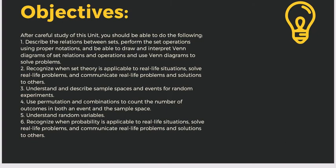Number three: understand and describe the sample spaces and events for random experiments. Number four: use permutation and combination to count the number of outcomes in both an event and the sample space. Number five: understand random variables. And number six: recognize when probability is applicable to real-life situations, solve real-life problems, and communicate real-life problems and solutions to others. These objectives will be encountered in Chapter 1, Lessons 1, 2, and 3.